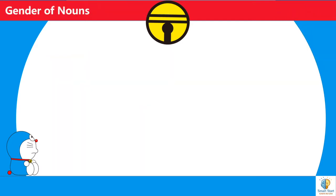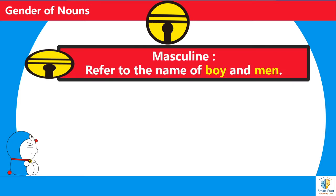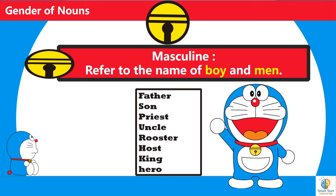Now we will revise all types of gender noun once again. Masculine refers to the name of a boy and man. For example: father, son, priest, uncle, rooster, host, king, hero.